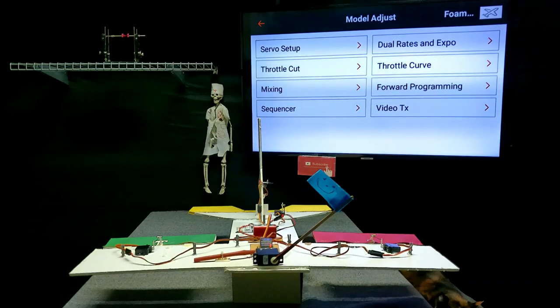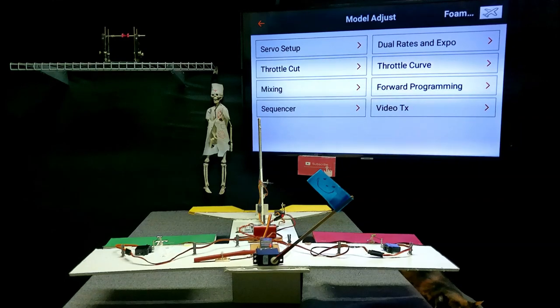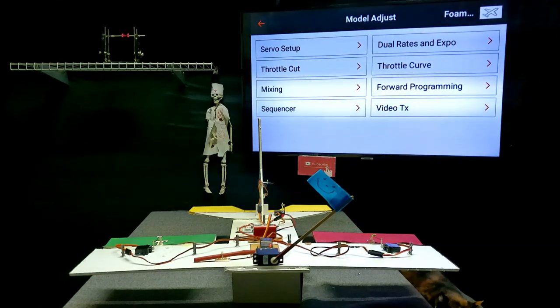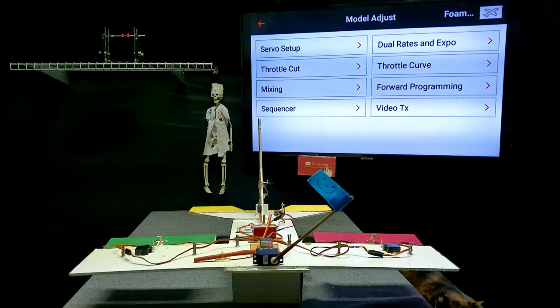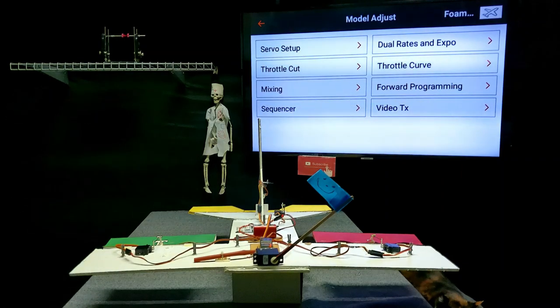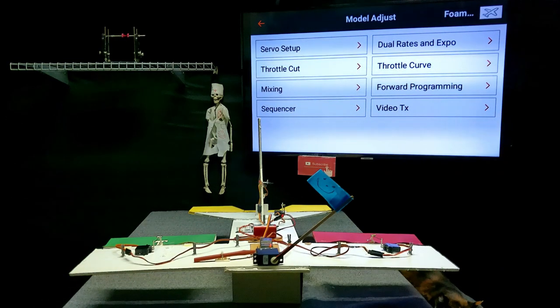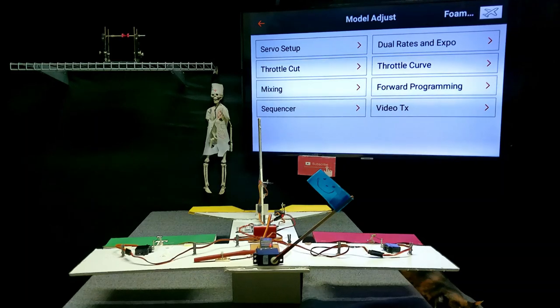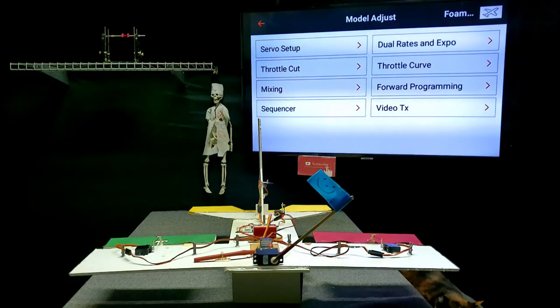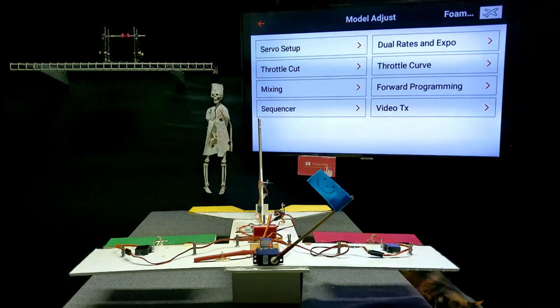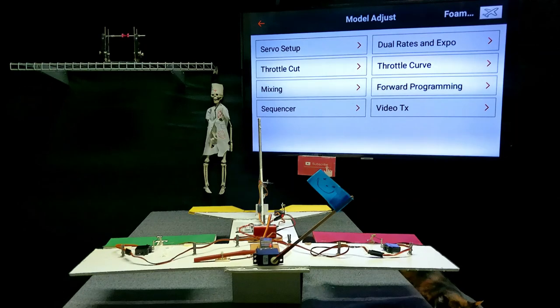And with that being said, if you have a forward programming capable transmitter and you bound it to an AR6210 receiver that does not have forward programming, then the forward programming will not show up in your menu. It's only there when your receiver and your transmitter are both capable and both updated.